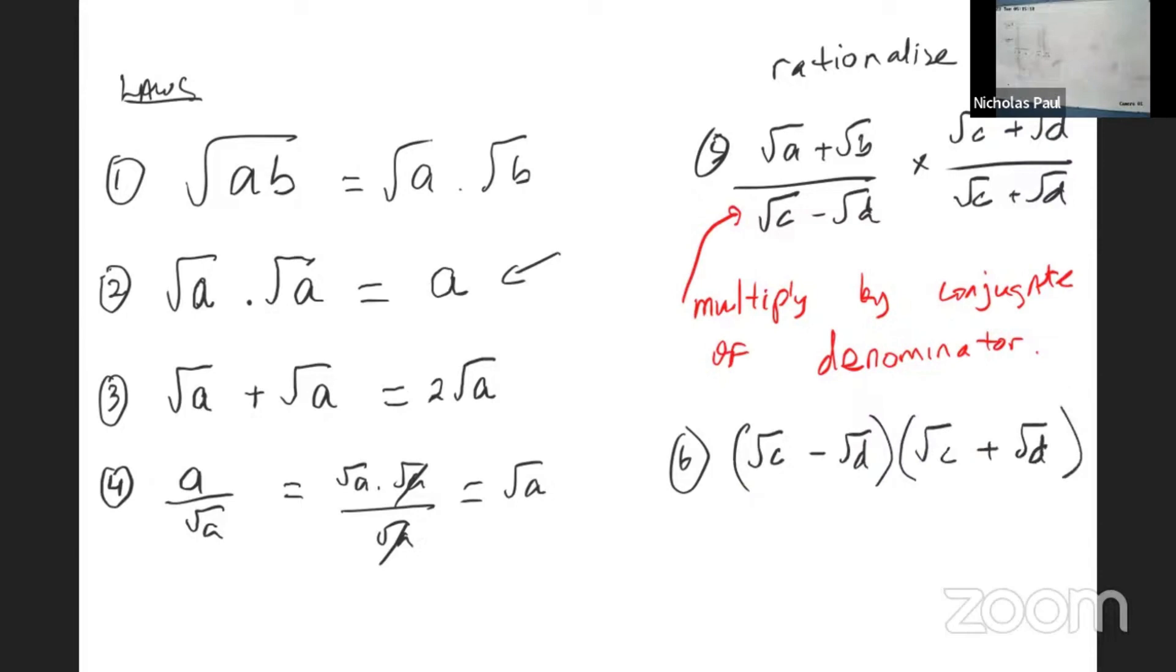You'll get root c squared minus root d squared, which is difference of two squares, which is c minus d.